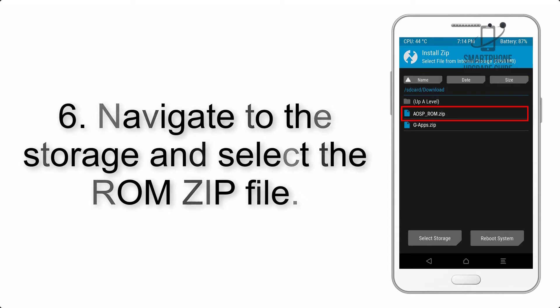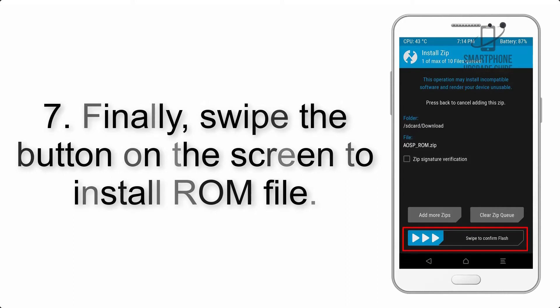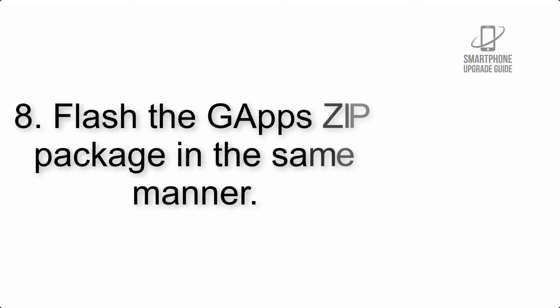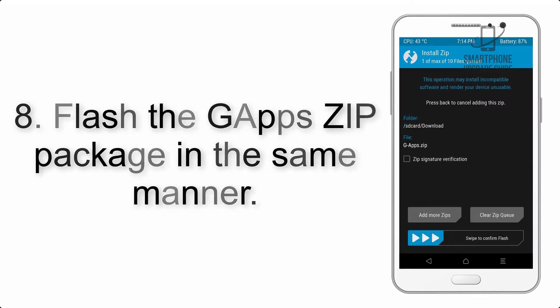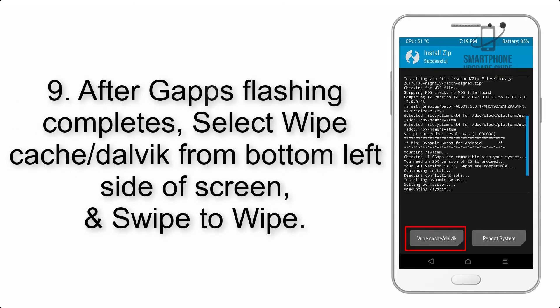Step 5: Go back to the recovery main screen and tap on the Install button. Step 6: Navigate to the storage and select the ROM zip file. Step 7: Finally, swipe the button on the screen to install the ROM file. Step 8: Flash the GApps zip package in the same manner.